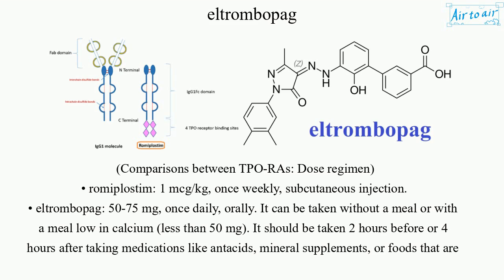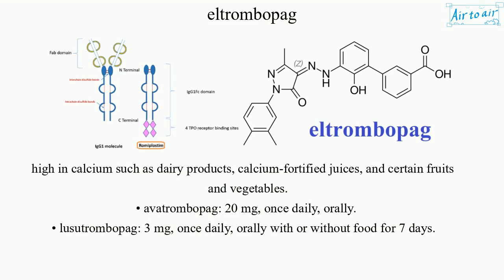Eltrombopag should be taken 2 hours before or 4 hours after taking medications like antacids, mineral supplements, or foods high in calcium such as dairy products, calcium-fortified juices, and certain fruits and vegetables. Avatrombopag: 20 mg once daily, orally. Lusutrombopag: 3 mg once daily, orally with or without food for 7 days.